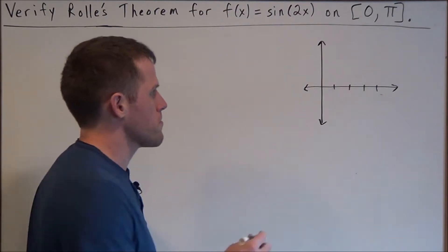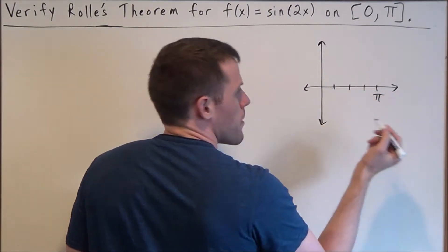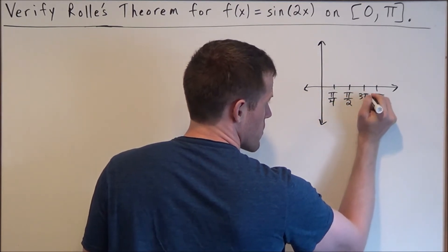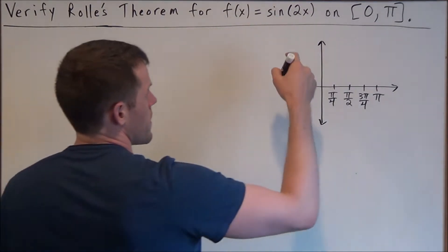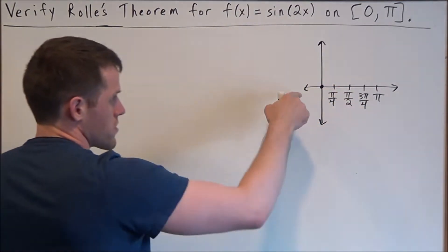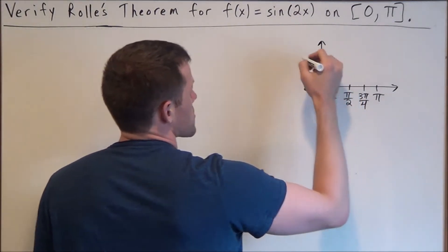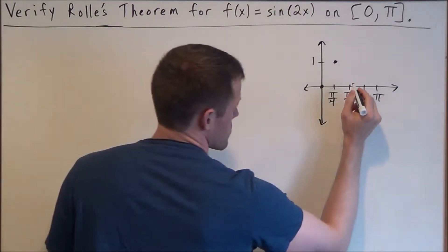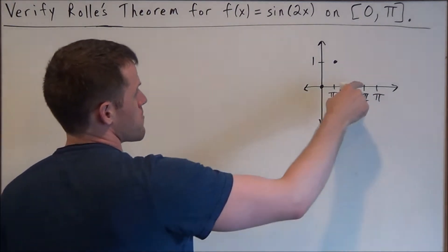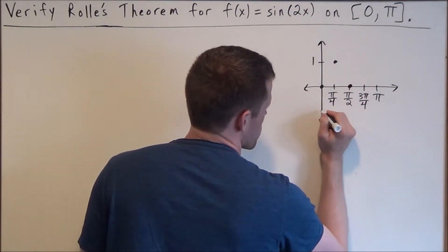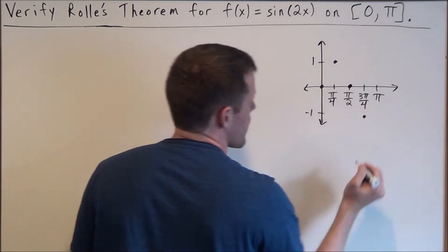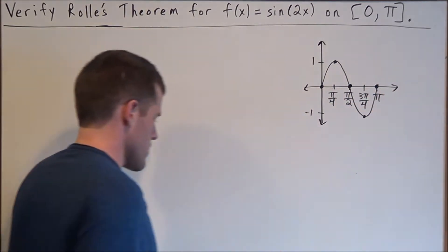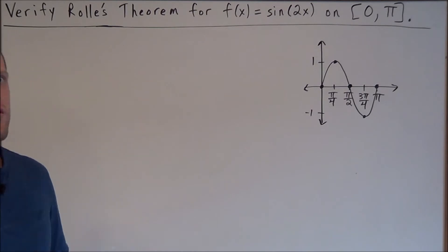We're going to sketch the function from 0 to pi, counting by pi/4's, making the middle pi/2. The first notch is pi/4, then 3pi/4. Plugging in: sin(0) = 0; at pi/4 we get sin(pi/2) = 1; at pi/2 we get sin(pi) = 0; at 3pi/4 we get sin(3pi/2) = -1; and at pi, sin(2pi) = 0. Sketching this gives us the full graph of sin(2x) from 0 to pi.